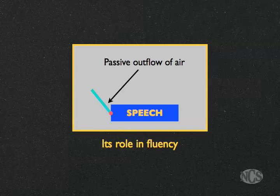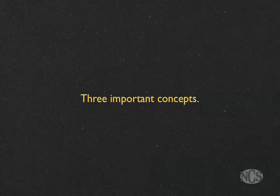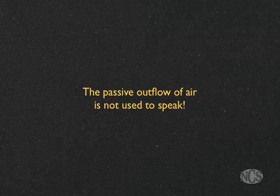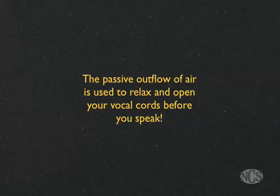There are three important concepts with respect to that passive outflow of air. It is only when the air is coming out of your mouth that the tension comes off your vocal cords. The air going in — the inhalation — is air you need to breathe and to speak, but in terms of taking tension off your cords, it doesn't do very much. The passive outflow of air is not used to speak; it is used to relax and open your vocal cords before you speak.